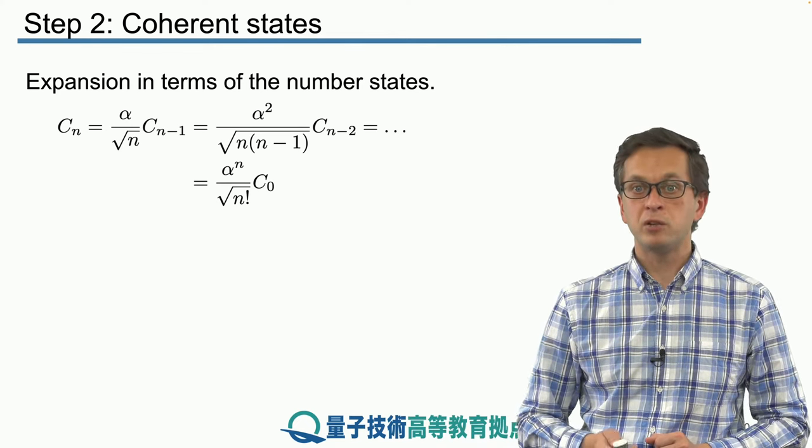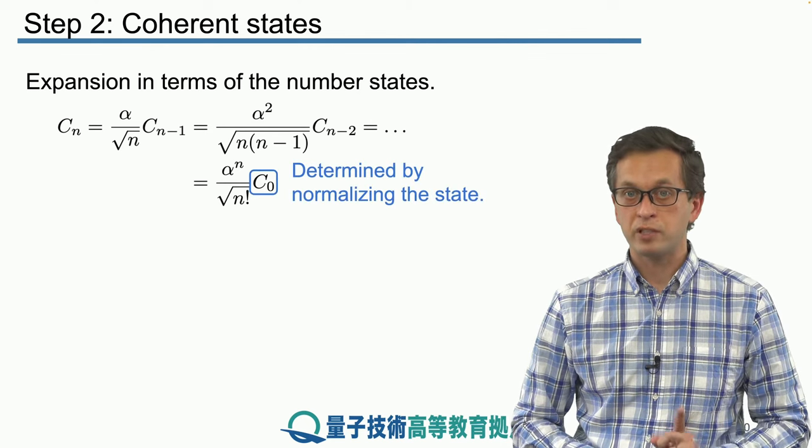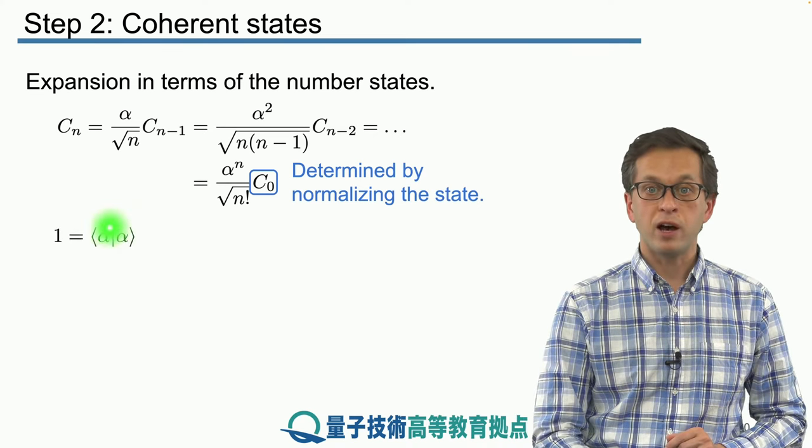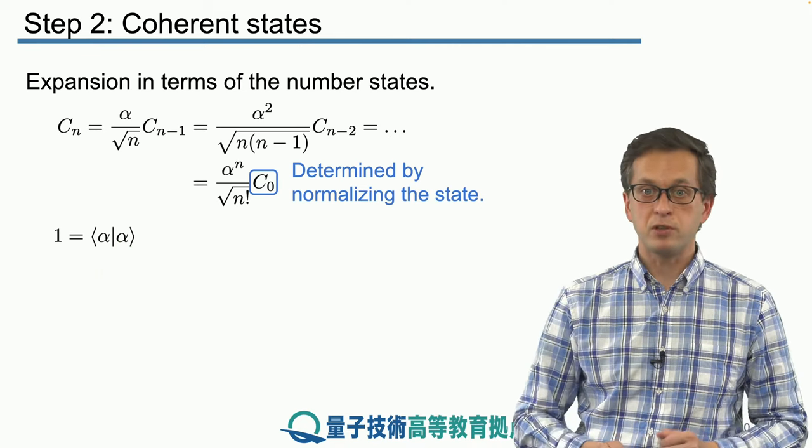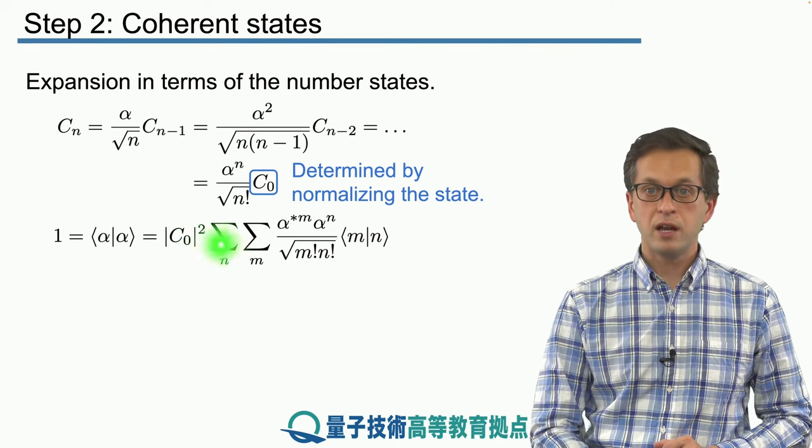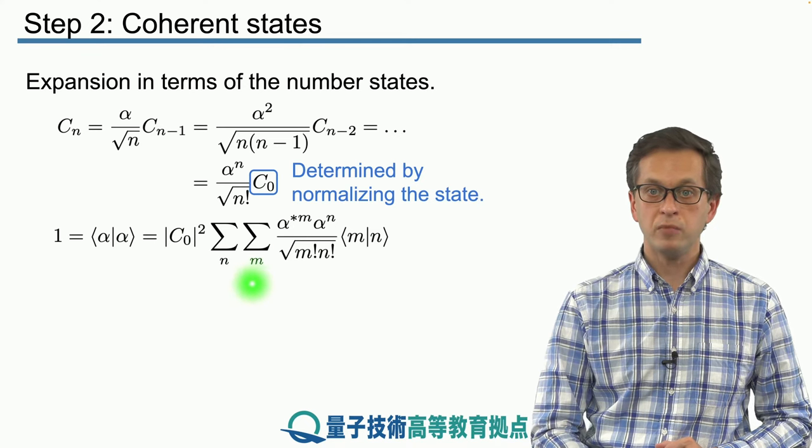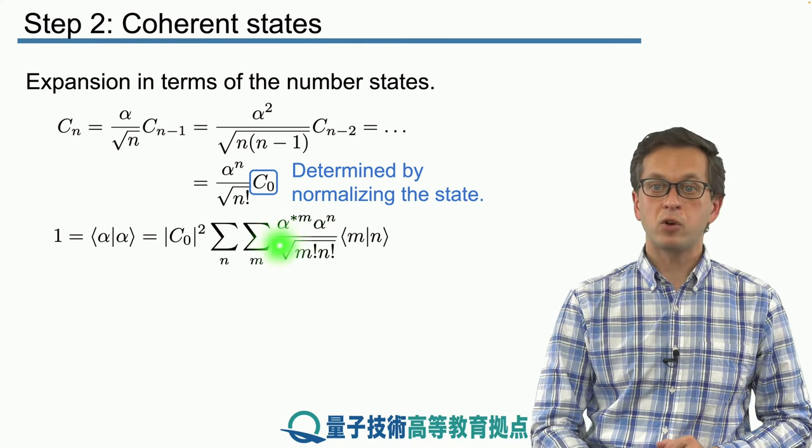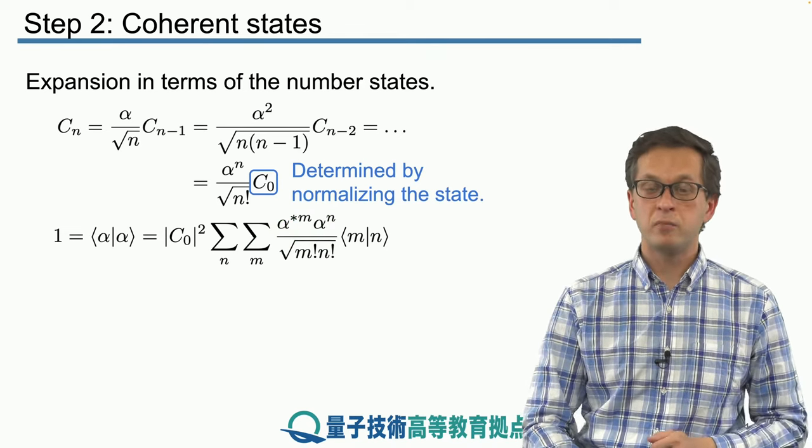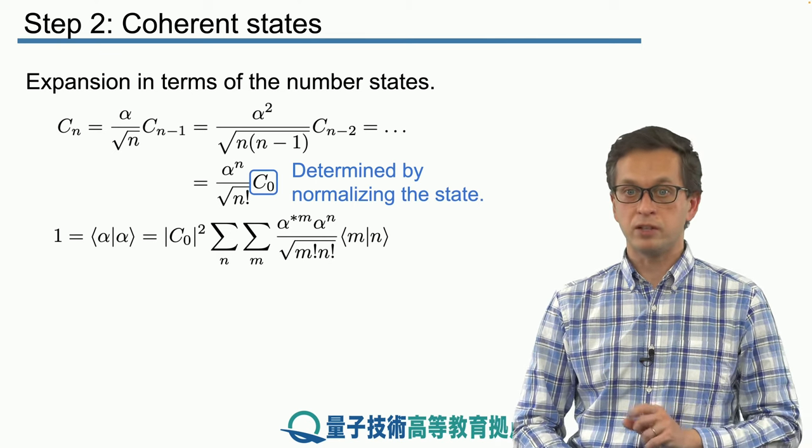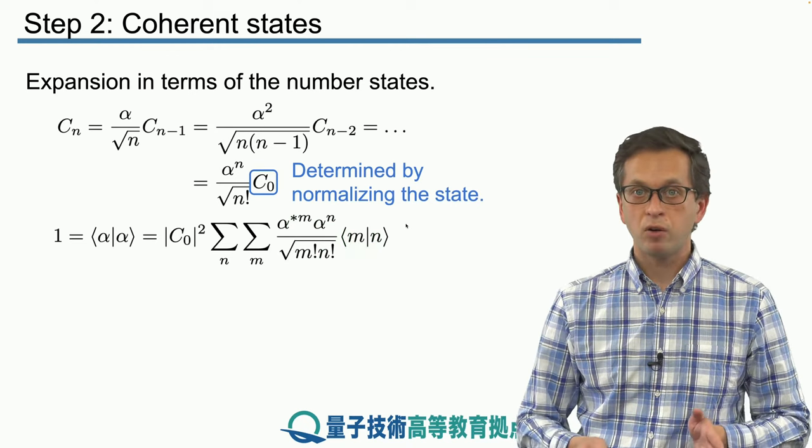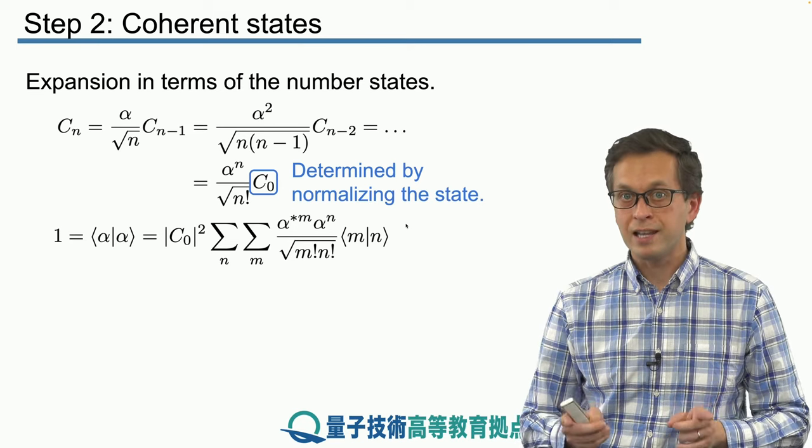Well, that's determined by the normalization condition. We demand that our coherent state, our expansion in terms of number states, is properly normalized. Therefore, we say that 1 is equal to inner product of alpha with itself. So we can just substitute in our expression and we obtain the following double sum. We get that the modulus of C0 squared is this double sum running over indices n and m. And then this fraction, alpha conjugate, because it's a complex number, to the power of m times alpha to the power of n divided by square root of m factorial times n factorial times the inner product between number states m and n. But we know what that is. All the number states are orthogonal unless they're the same number state.